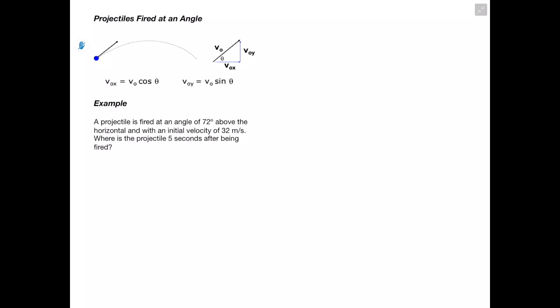The example says: a projectile is fired at an angle of 72 degrees above the horizontal with an initial velocity of 32 meters per second. Where is the projectile 5 seconds after being fired? We'll split up our horizontal and vertical components just as before, but this time we don't immediately have Vox or Voy — we need to solve for those using the component equations.